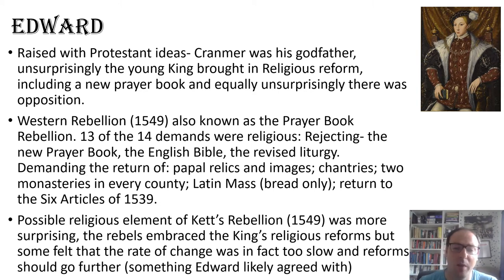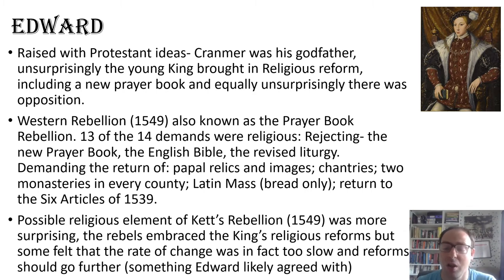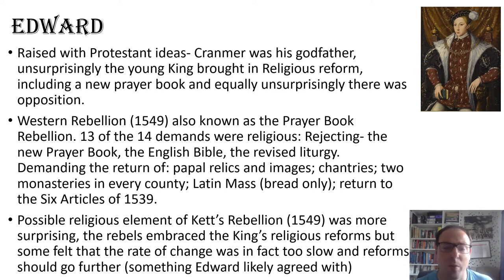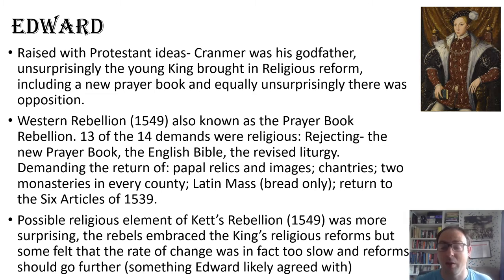Thirteen of the fourteen demands made by those involved in the Western Rebellion were religious. There were things like rejecting the new prayer book, rejecting the use of an English Bible. They wanted to revise the liturgy, demanded the return of papal relics, images and chantries — small churches where prayers for the dead are said, which is a key part of Catholic practice in terms of speeding people through purgatory. They wanted at least two monasteries in every county, the return of Latin mass, and they wanted communion in one kind — bread only — which was the Catholic practice, as opposed to the Protestant practice of bread and wine.